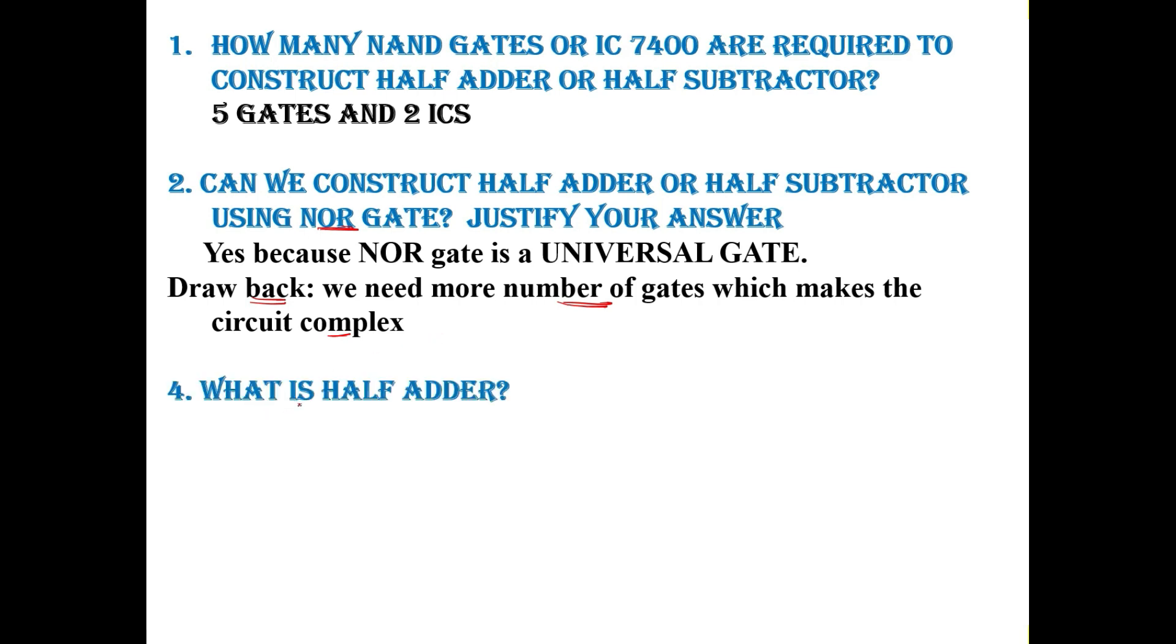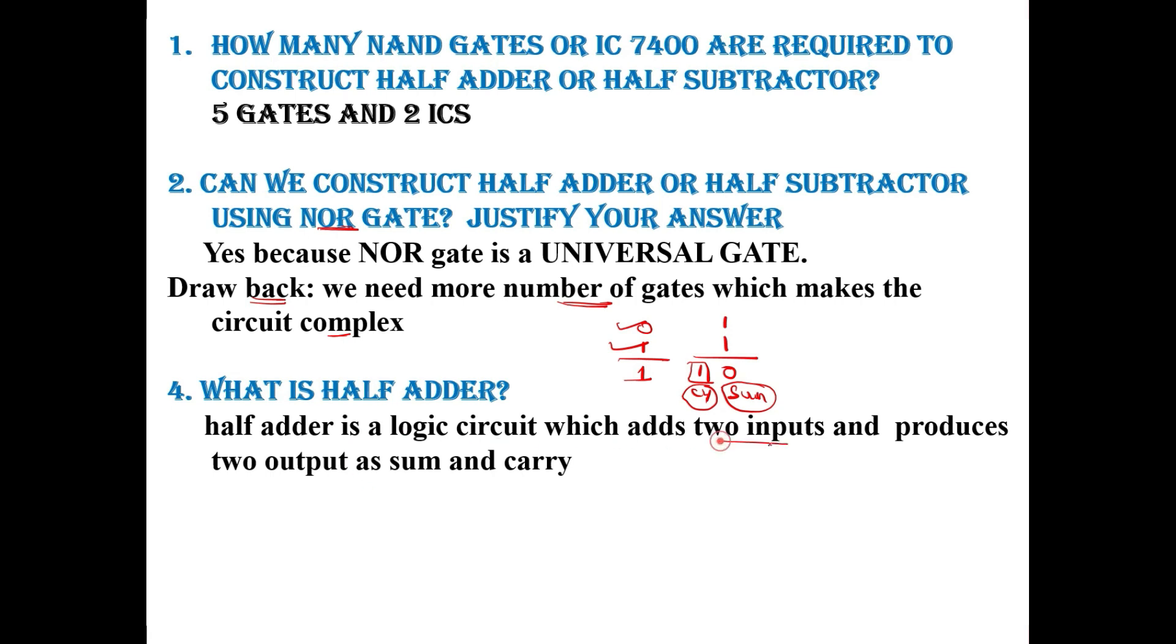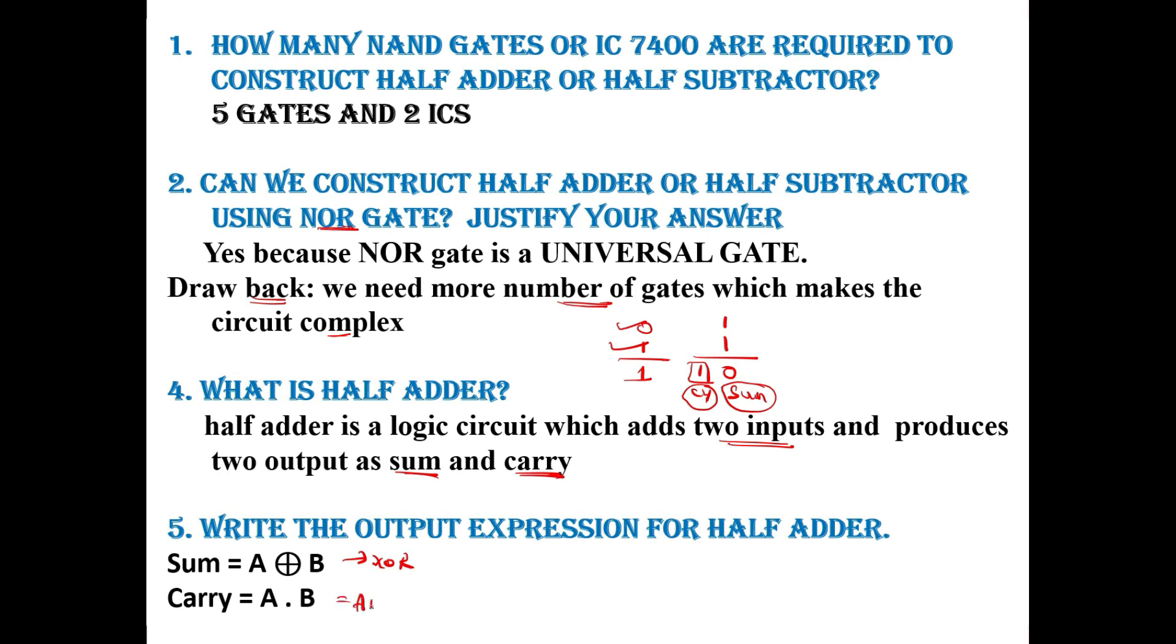What is half adder? Suppose if I need to add 0 and 1, I will get 1 as the answer. Whereas if I add 1 and 1, the sum should be 0, there should be a carry. So that means it should provide me 2 outputs: 1 is sum and 1 is carry. I am adding 2 bits. This is the definition of half adder. That is, half adder is a logic circuit which adds 2 inputs and produces 2 outputs such as sum and carry. What is the expression for sum and carry? Sum is A XOR B, that is XOR gate. Carry is AB, that is AND gate output. Which gate represents sum? Sum represents XOR gate, carry represents AND gate.